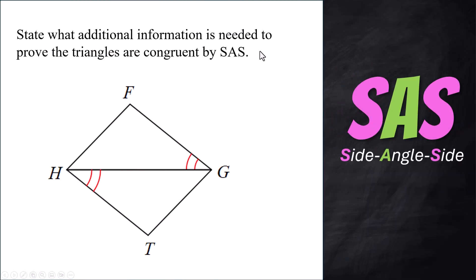State what additional information is needed to prove that the triangles are congruent by side angle side. Well, I've got two angles here. The side in between, I know I'm going to get that. That's reflexive property. They're sharing that. So I need another side. And if you're going to use side angle side, that second pair of congruent sides has to sandwich the angle. So it's got to be this one and this one. Now you need to write that out. Go from the corner here where we have the angle G to F and H to T.